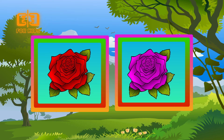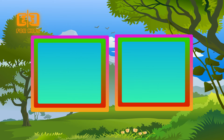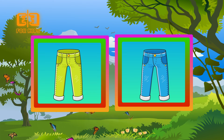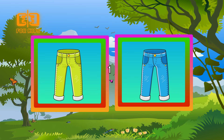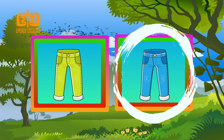Choose the red object. Three, two, one. Correct kids! A red rose. Choose the blue object. Three, two, one. Correct kids! Blue jeans.